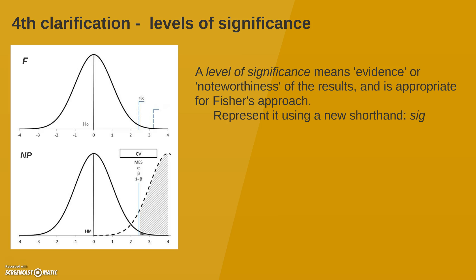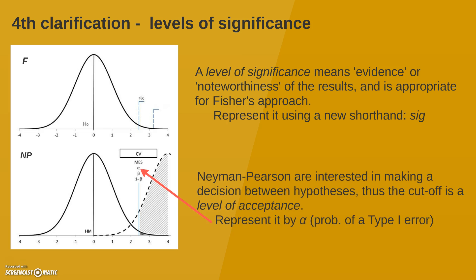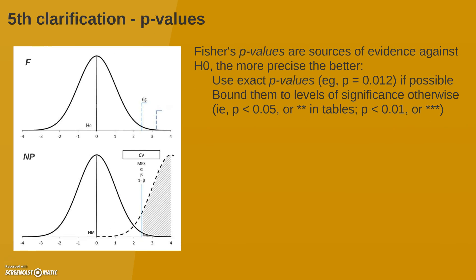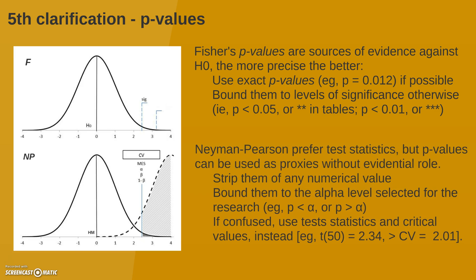The third clarification has to do with the level of significance. Significant normally means evidence or noteworthiness of the research results, which is what Fisher's approach seeks. We need a new shorthand to represent it — I propose SIG. In the case of Neyman-Pearson, they are interested in making a decision between hypotheses, and the cutoff point is just a level of acceptance based on reducing the type 1 error probability — so we can represent it with alpha. A fourth clarification has to do with p-values. Fisher's p-values are a source of evidence against the null hypothesis — the more precise, the better — so we use p-values with Fisher. In the case of Neyman-Pearson, we don't need p-values, but we can use them as proxies without evidential rule. If we use p-values with Neyman-Pearson, strip them of any numerical value and bound them to the level of alpha selected. If confused, choose test statistics instead.